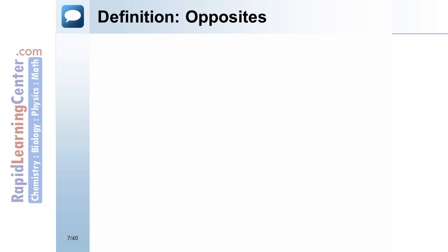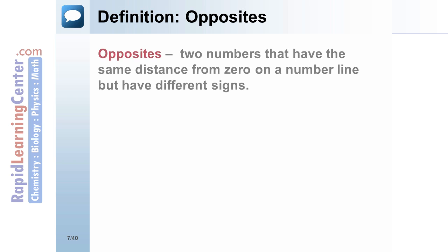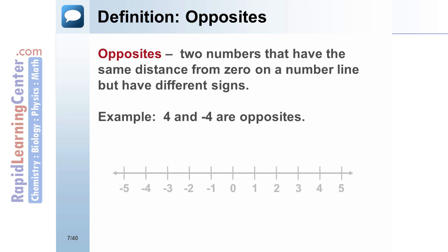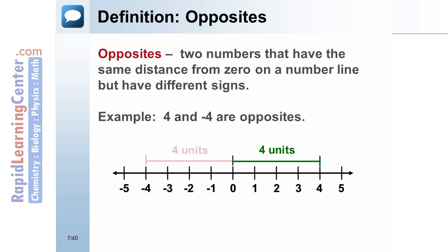Opposites are two numbers that share the same distance from zero on a number line, but have different signs. For example, 4 and negative 4 are opposites. Both are four units from zero, and they have different signs.